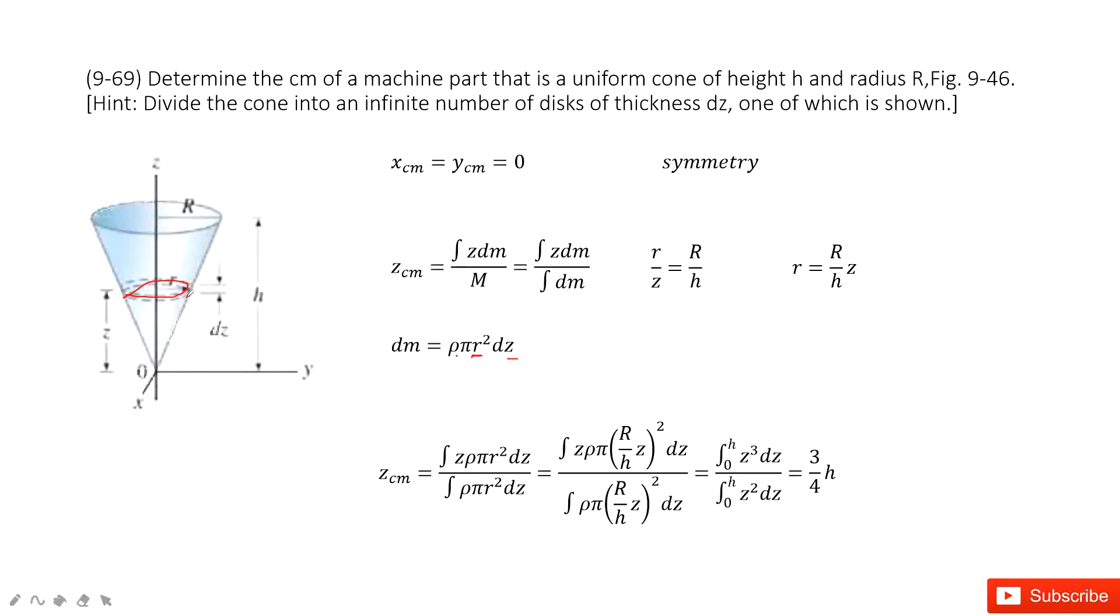So you can see, this is a similar triangle. R, this side of the length, divided by z, equal to capital R divided by H. Agree? Yes, this is a similar triangle. So we get this function. In this function, we find the relationship between these two variables, r and z.